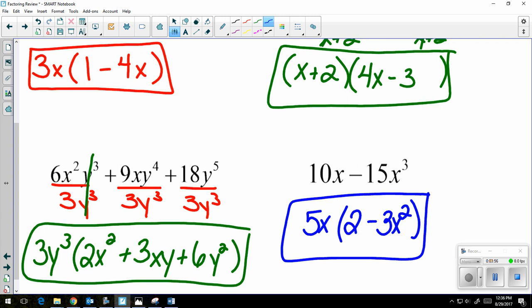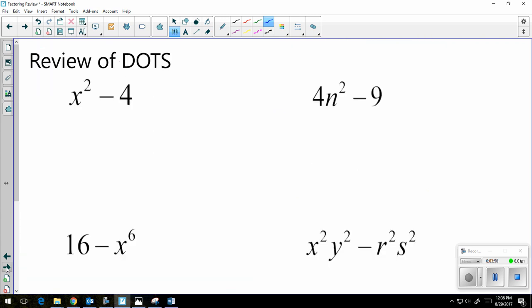Let's move on from GCF and let's take a look at DOTS. Now remember, DOTS stands for difference of two perfect squares. So what that means is I have to have difference, so I have to have a subtraction sign. I have to have only two terms.